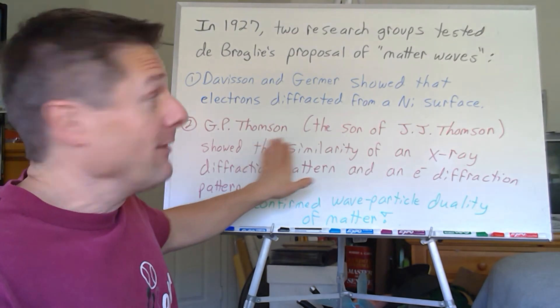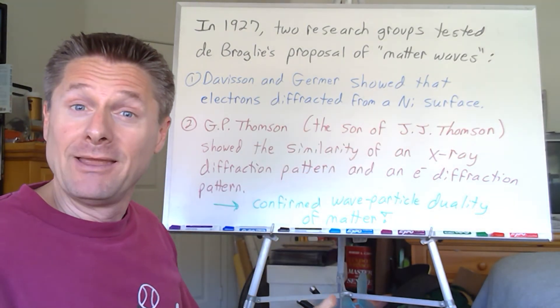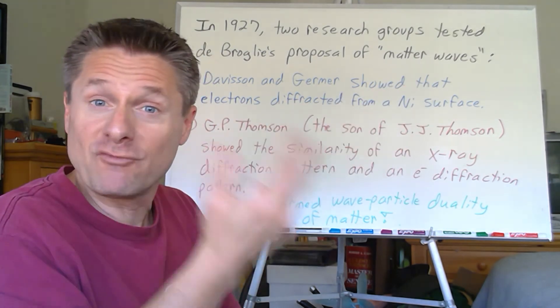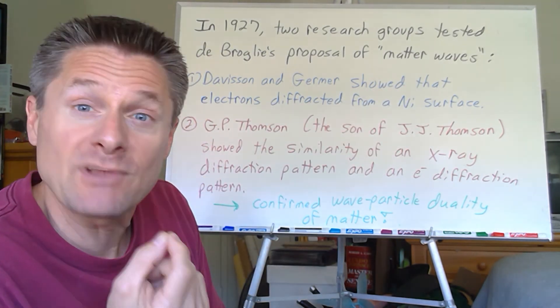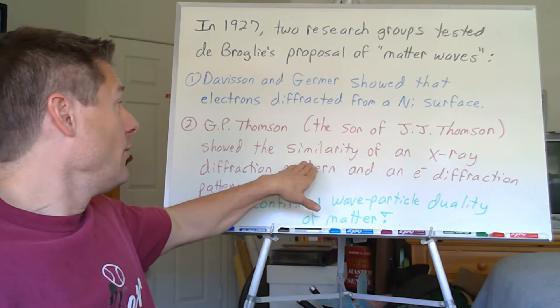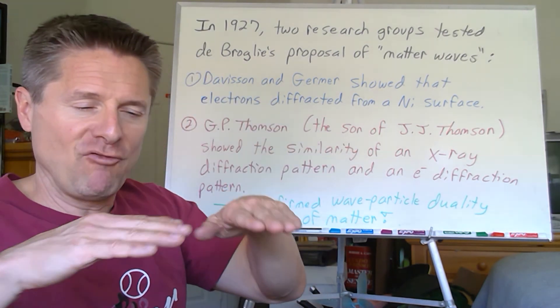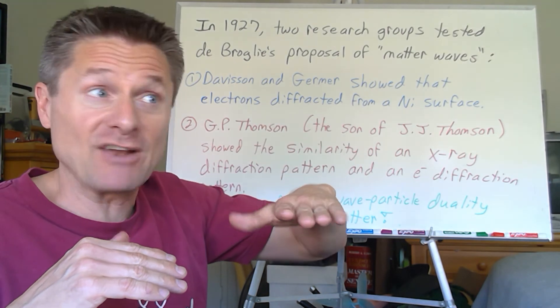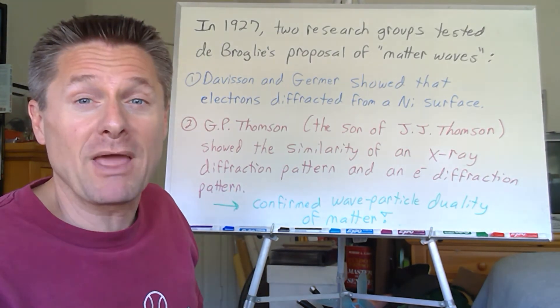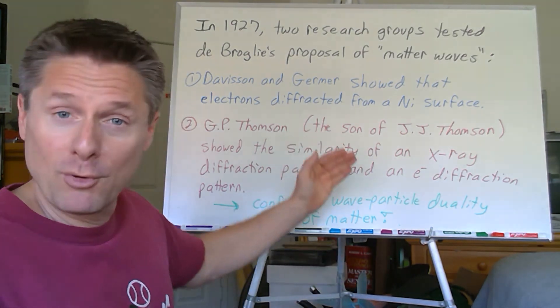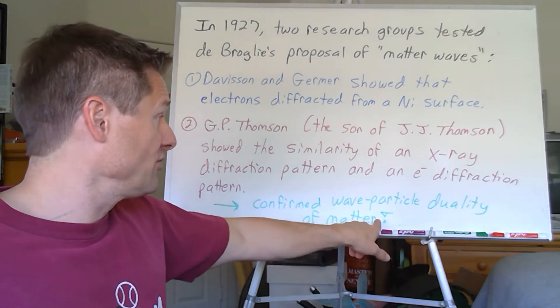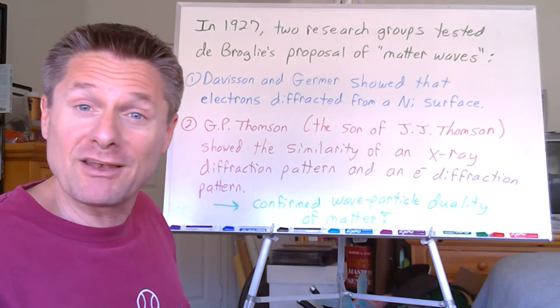G.P. Thompson, seen that name before? The son of J.J. Thompson. Remember 1897-ish, J.J. Thompson was the first one to get those electrons from the cathode ray tubes and show that electrons were subatomic particles. The son followed the father into the brainiac science mode. He actually compared and contrasted off of a metal foil an x-ray diffraction pattern and an electron diffraction pattern, and they look very similar. More proof that electrons had wave behavior. So they both confirmed de Broglie's proposal that matter had waves, matter waves, wave-particle duality of matter.